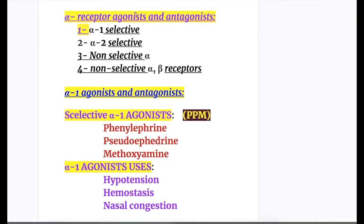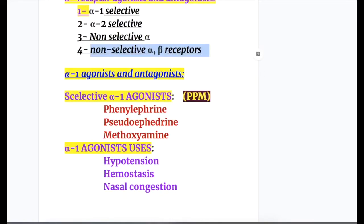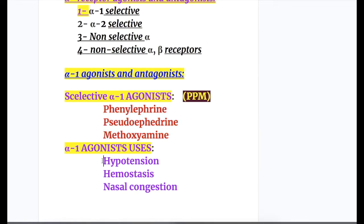Alpha receptor agonists and antagonists may be alpha-1 selective, alpha-2 selective, or non-selective for alpha-1, alpha-2, and non-selective alpha-beta receptors. The selective alpha-1 agonist mnemonic is PPM — parts per million — standing for phenylephrine, pseudoephedrine, and methoxamine. Alpha-1 agonists are used in hypotension, hemostasis, and nasal congestion.